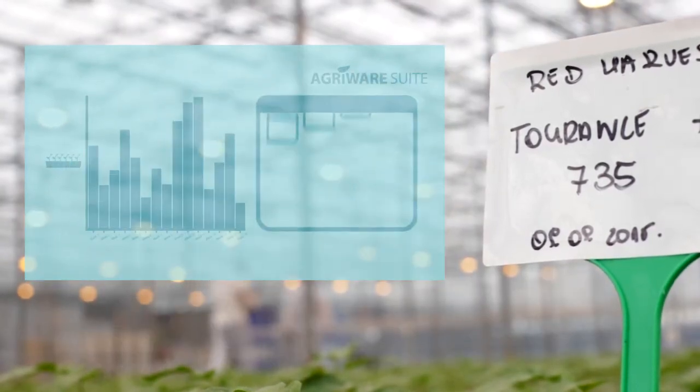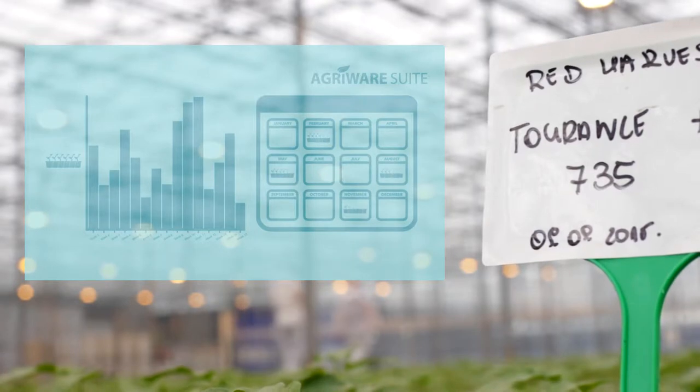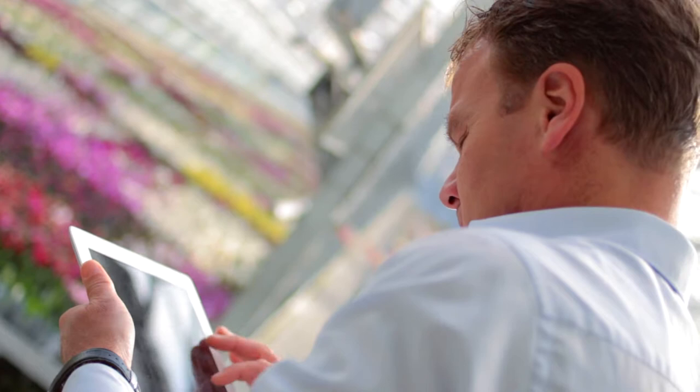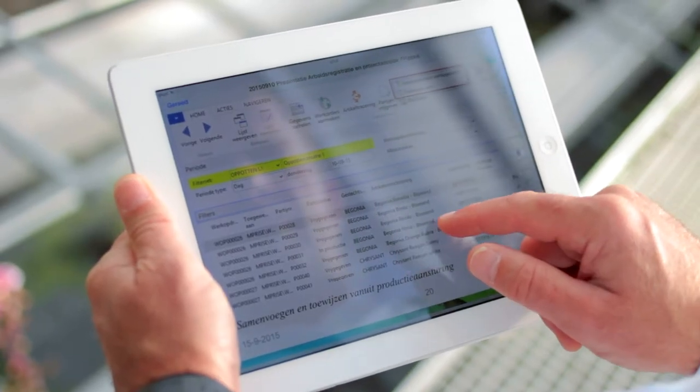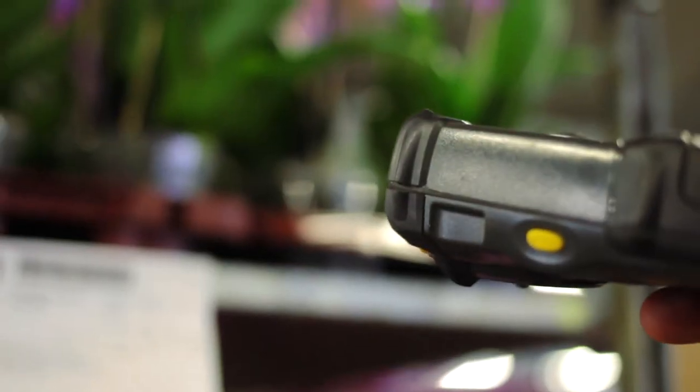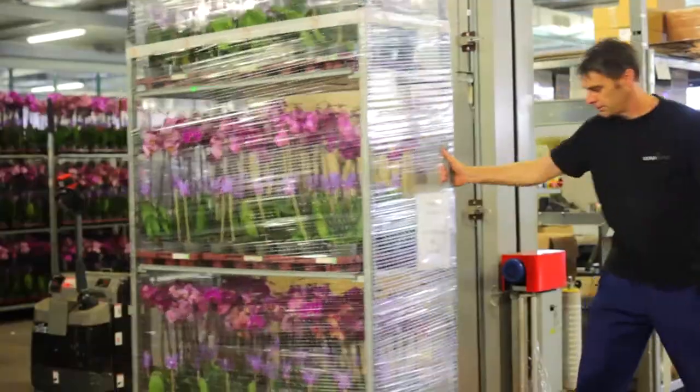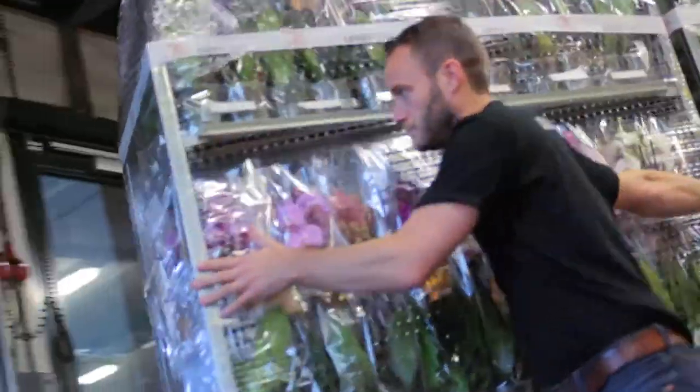Comprehensive cultivation statistics make it possible to constantly optimize the planning. For the sales of our orchids, we now make use of eBusiness. It's easy to use and it makes it possible to directly offer our products for sale at the auction and our customers.